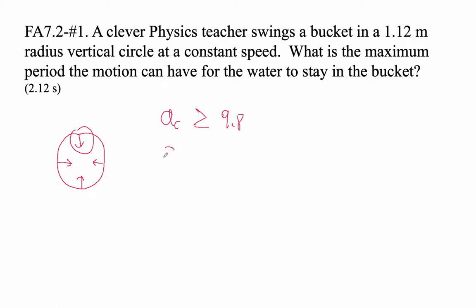So what I'm going to do is set the centripetal acceleration equal to 9.8. Since it asks for the period of the motion, the period is the t. So let's use the centripetal acceleration formula that has the t in it. That is centripetal acceleration is 4π²r over t².